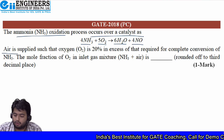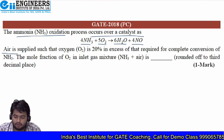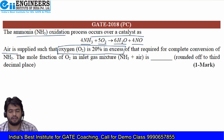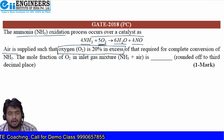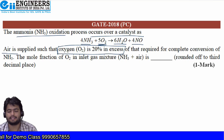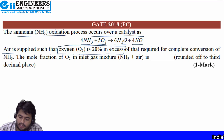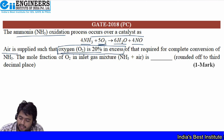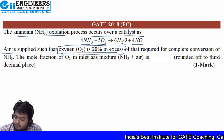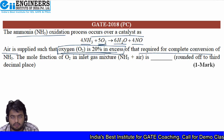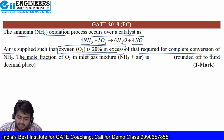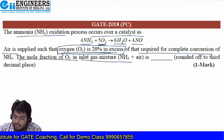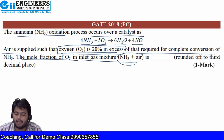According to stoichiometry we require some amount of oxygen, but for safety purposes so that we can have the total reaction, oxygen is usually supplied in excess of the theoretical amount. That is the same thing being done here — oxygen is supplied 20% in excess of what is theoretically required for complete conversion. We have to find the mole fraction of oxygen in the inlet mixture, that is the ammonia and air mixture.